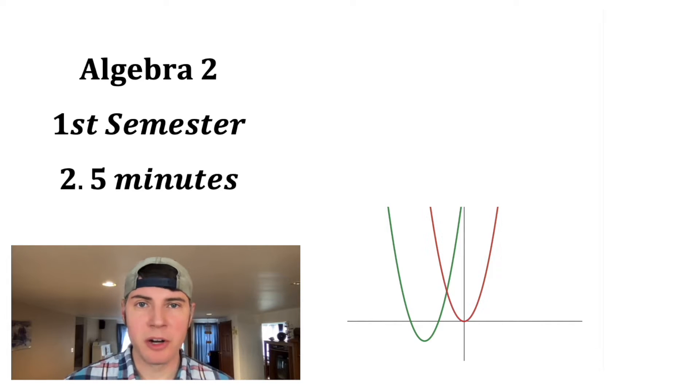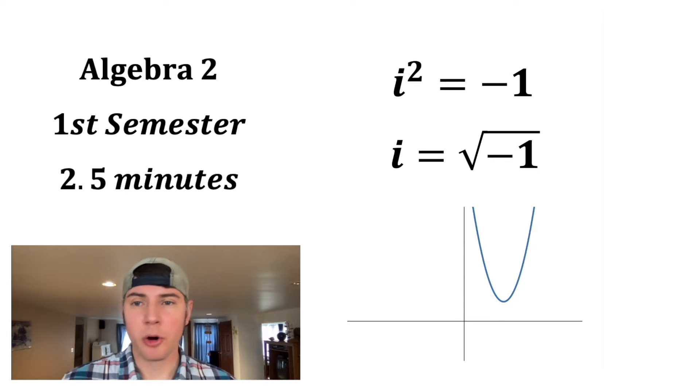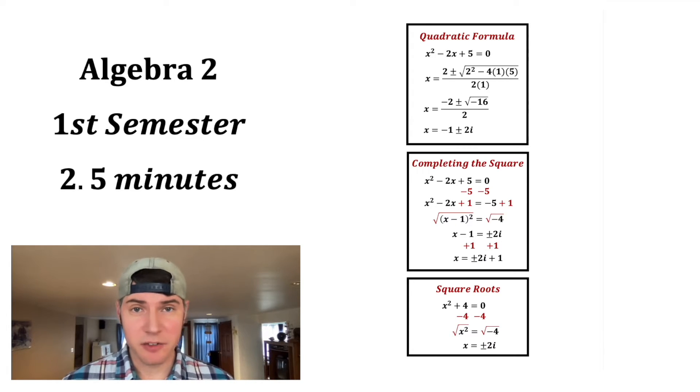A parabola may have two, one, or zero x-intercepts. In the situations where there are zero x-intercepts, we still have solutions to the equations but they're complex solutions using i, where i squared is equal to negative one, or you can think of it as i is equal to the square root of negative one. When solving these and a negative shows up under the square root, you know the solution will be complex.